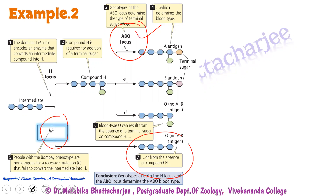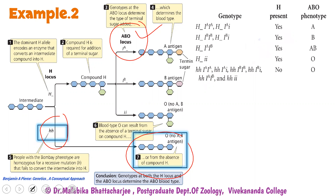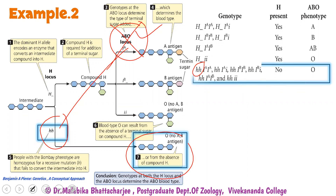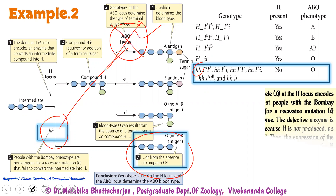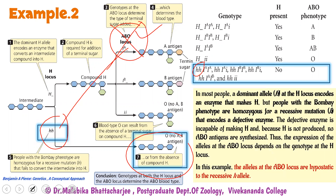Even though individuals may have IA or IB alleles in their ABO locus, they will show an O blood type, and no A or B antigen is produced. When we have the small h, small h condition, it is masking the effect of the ABO locus entirely. So whenever small h, small h is present, there is no H compound, no A or B antigen, and the blood is always O category. The H locus is epistatic to the ABO locus — or the ABO locus is hypostatic to the H locus.